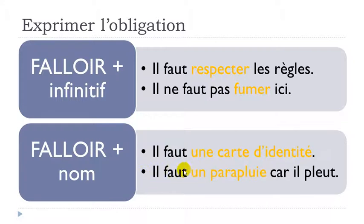Second example here. Il faut un parapluie, umbrella, un parapluie, car, because, il pleut. It's raining. Il faut un parapluie, car il pleut.